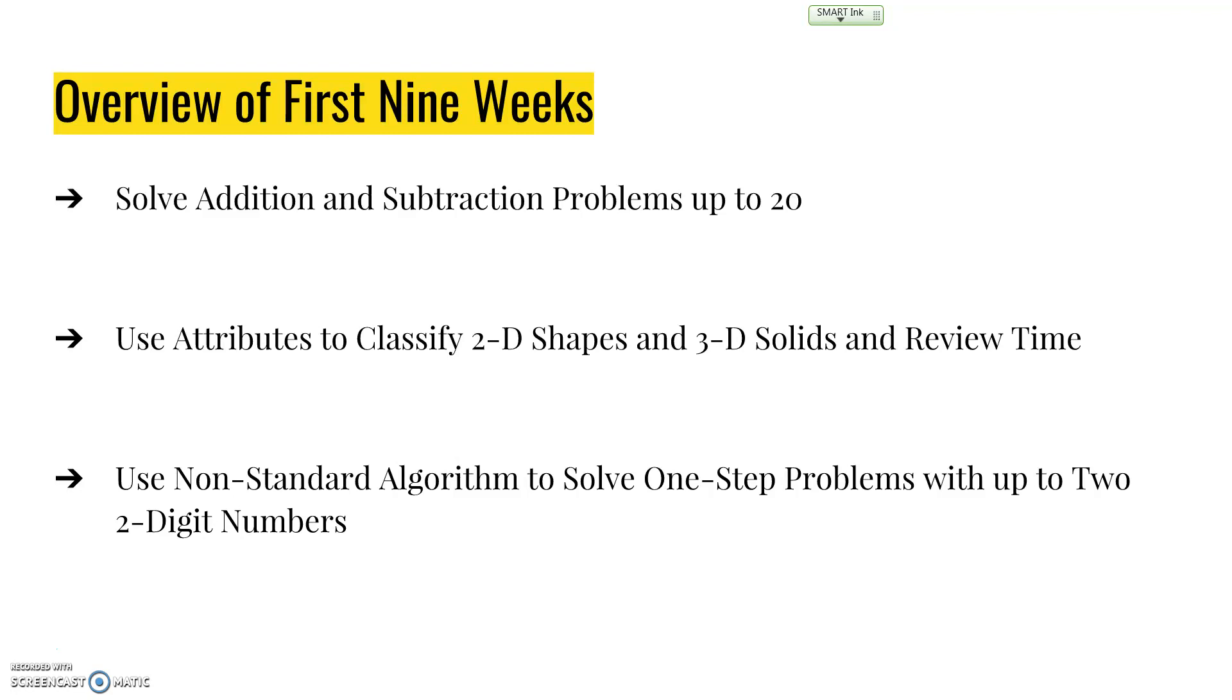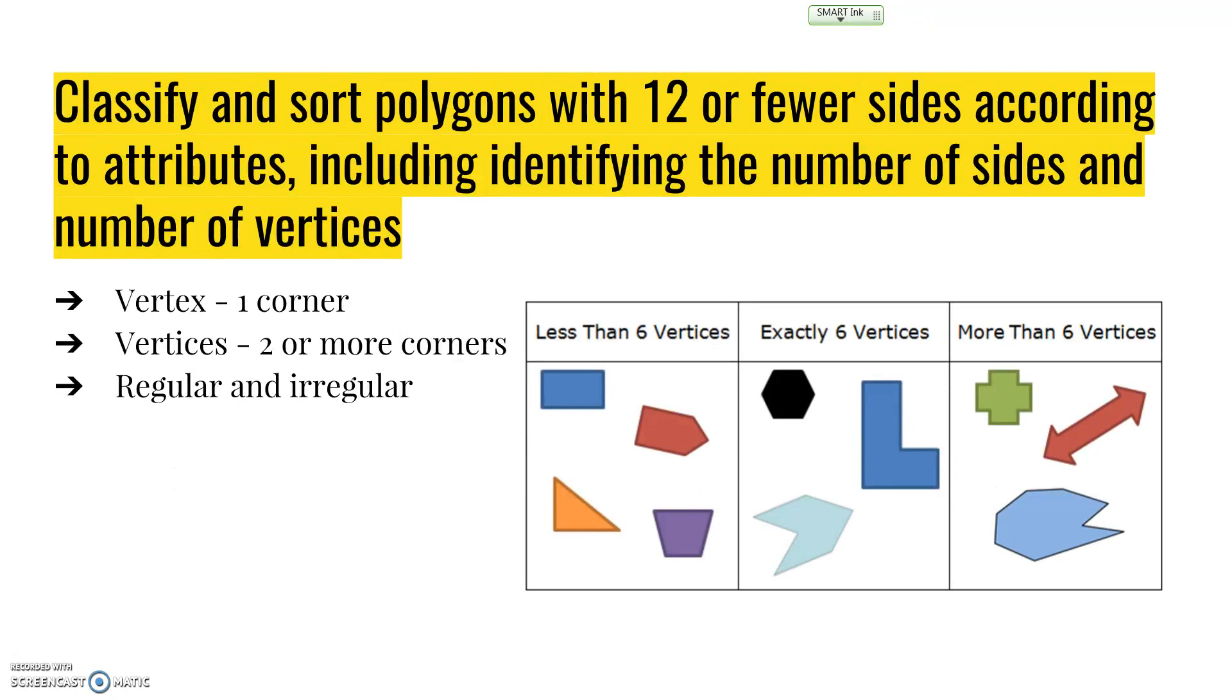On this video, we'll focus on geometry, 2D and 3D shapes, and telling time. In second grade, they'll classify and sort polygons with 12 or fewer sides according to attributes, including identifying the number of sides and vertices. To be a polygon, it has to have straight sides with no curves and be closed with no openings.